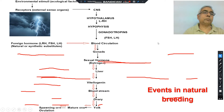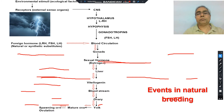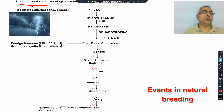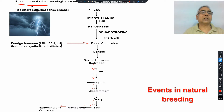Before going directly to the topic, we will first understand the mechanism of the natural breeding process. Under natural conditions, fishes breed in flowing water, in rivers. When favorable environmental conditions prevail — such as cloudy weather, thunderstorms, temperatures around 25 to 30 degrees centigrade, and rain — these factors are perceived by the external sense organs of the fishes present over the skin and eyes.